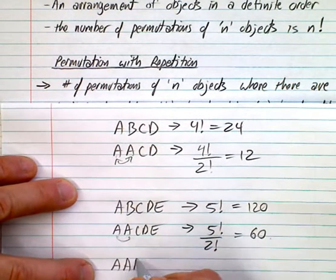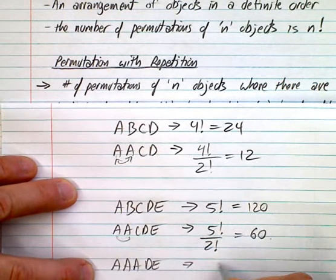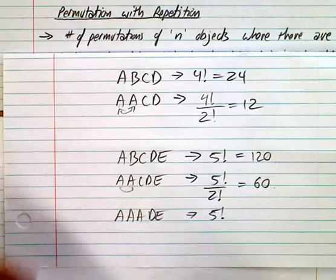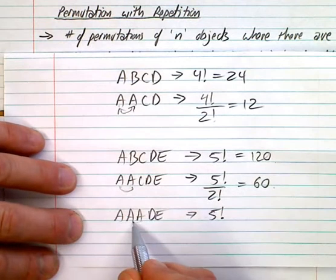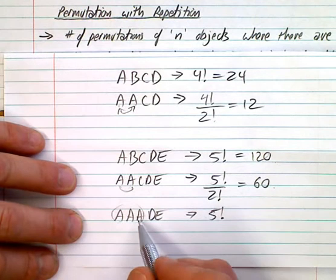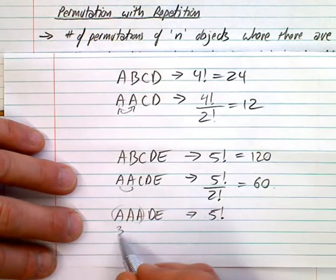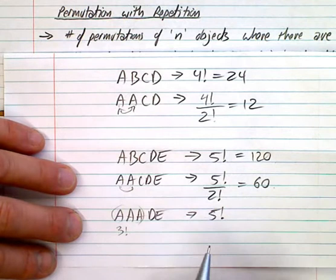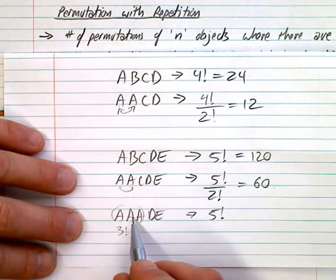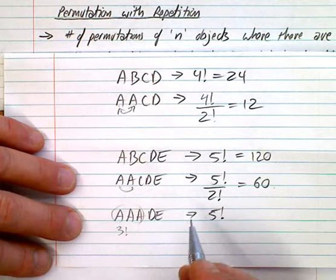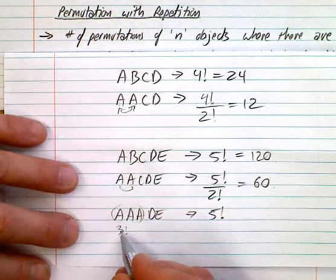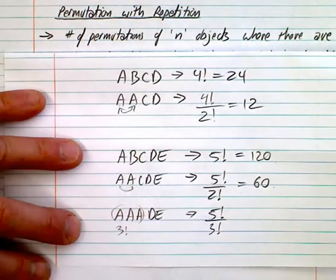What if I had a, a, a, d, e? It's still 5 factorial because there are five objects. But how many arrangements are there of those three a's? We know three objects have 3 factorial permutations — and all of those look identical, since a,a,a is the same no matter the order. So we have to reduce by that factor — divide by 3 factorial.